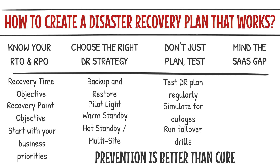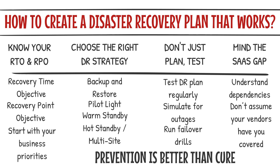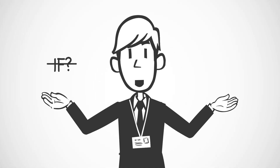Step four: mind the SaaS gap. If you're running SaaS applications — and let's be honest, who isn't — you've got an extra layer of complexity. Disaster recovery for SaaS isn't just about your infrastructure; it's about understanding the dependencies behind your apps. What happens if the API your SaaS relies on goes down? What if your provider's storage region suffers an outage? One weak link can bring your entire stack crashing down. Pro tip: don't assume your SaaS vendors have you covered. Ask them the tough questions — what's their disaster recovery plan, how do they handle outages, what's their RTO and RPO? Their answers will tell you whether you need additional failover plans.